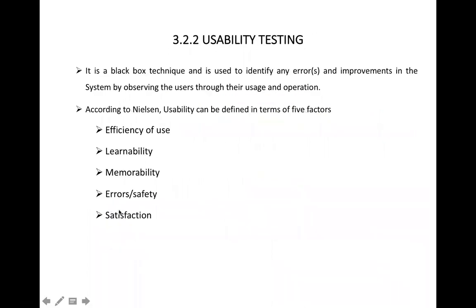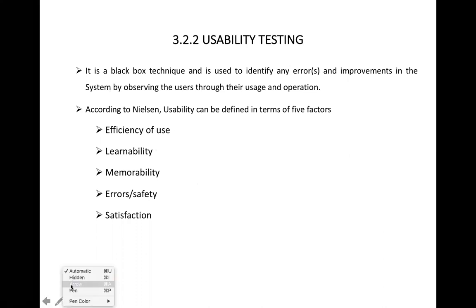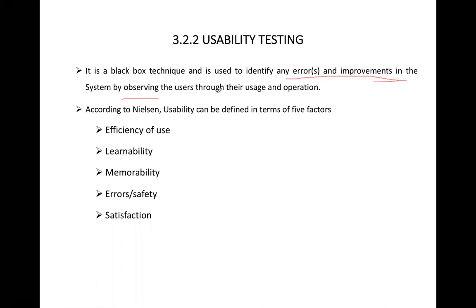The next type of non-functional testing is usability testing. Usability testing is a black box testing technique, meaning the tester does not need to know how the system works internally. Its main purpose is to identify any errors and improvements in the system by observing the user through their usage and operations — checking from the user's point of view.